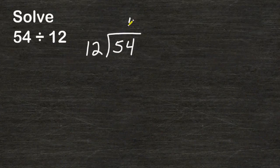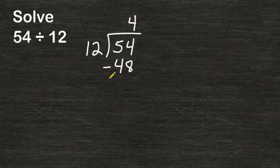12 can be divided into 54 four times for a total of 48. The difference between 54 and 48 is 6.